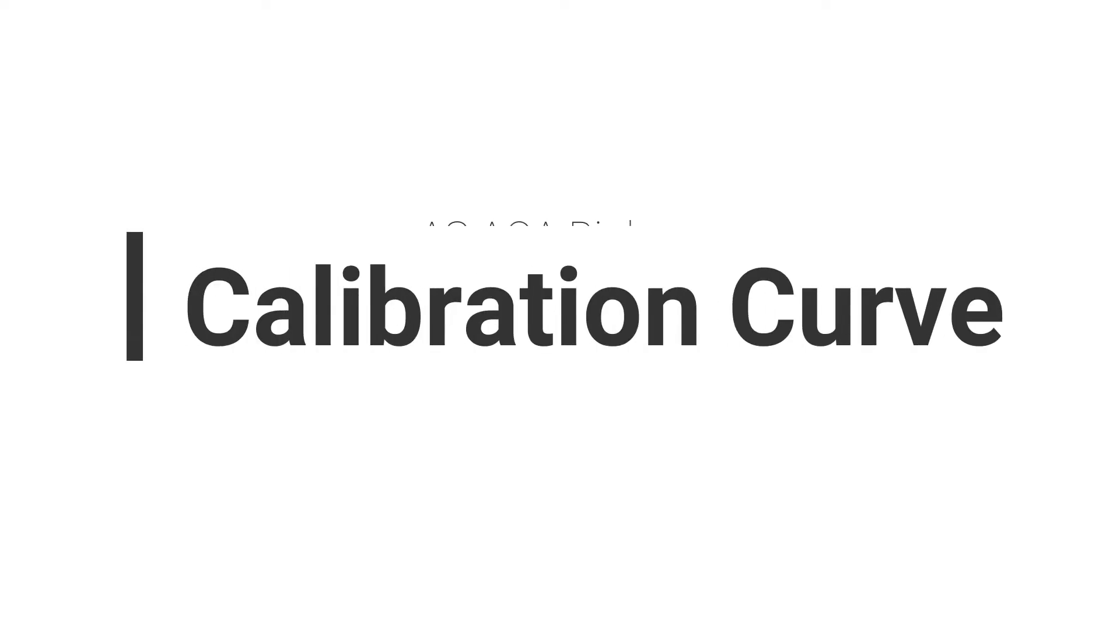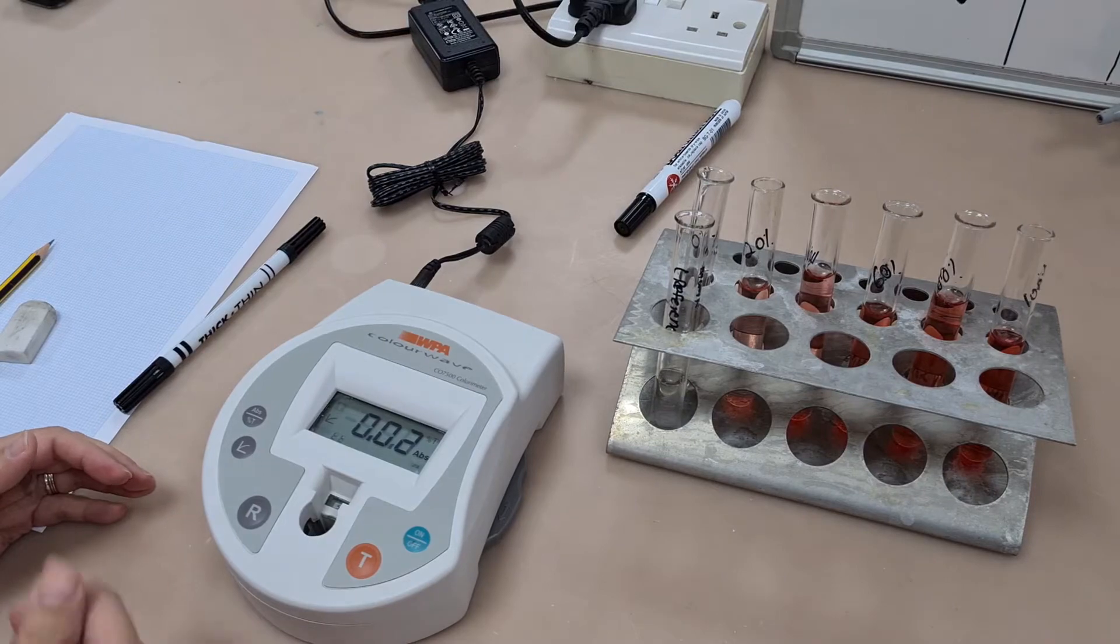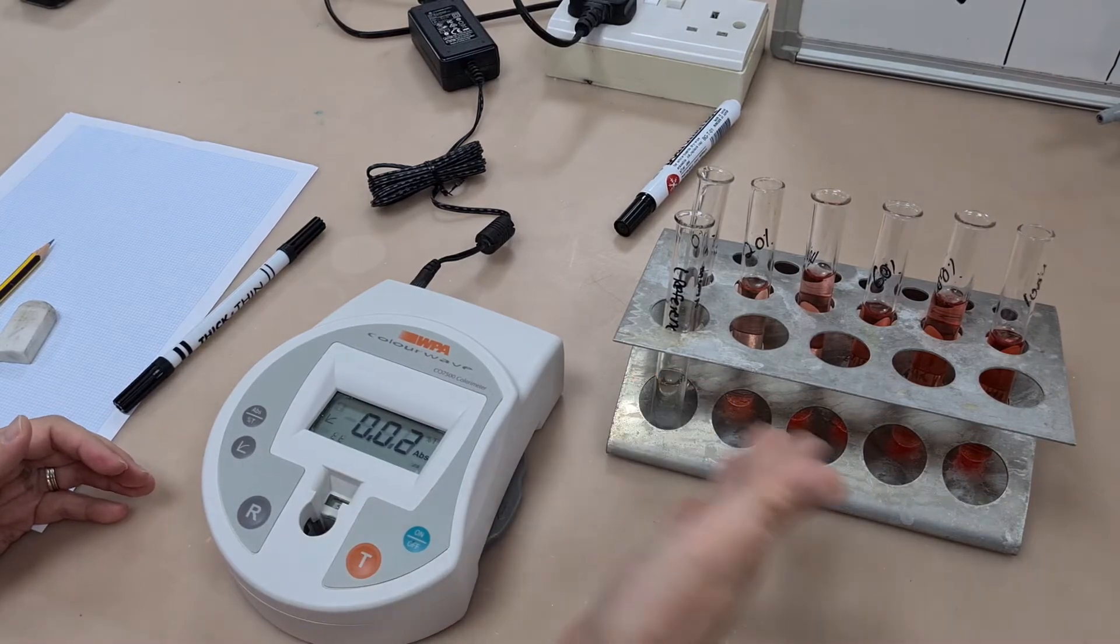In this video we'll look at how to use a colorimeter to make a calibration curve. We're starting at the point where you've already made your dilution series of your vegetable extract.